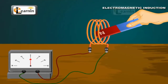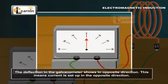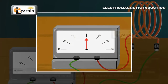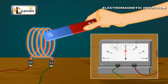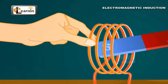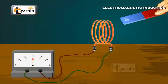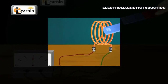Now move the magnet away from the coil. The galvanometer shows a deflection again but in the opposite direction, meaning current is set up in the opposite direction. If you hold the magnet with its south pole facing the coil and repeat the above steps, the deflections are again observed but are reversed. Similarly, motion of the coil itself also produces deflections in the galvanometer.